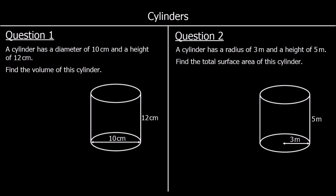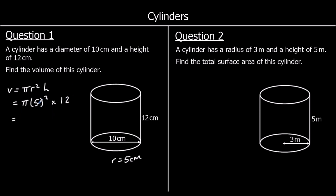To finish up, we've got two questions — one volume and one surface area. The first question is the volume of the cylinder, which is pi r squared times the height. The radius is 5 centimetres — half the diameter — so it's pi times 5 squared times 12. 5 squared is 25, so 25 pi times 12. 25 times 10 is 250, plus two more 25s is another 50, so 300 pi centimetres cubed.